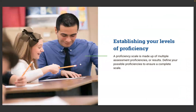A proficiency scale is made up of multiple assessment proficiencies or results. Define your possible proficiencies to ensure a complete scale. Typically, teachers using a standards-based grading system will report out on one of four results — a four, three, two, or one. When you get right down to it, competency-based grading is really just relaying to students: do you have it or don't you? Do you understand it or not? So it can be as simple as a one or a two.